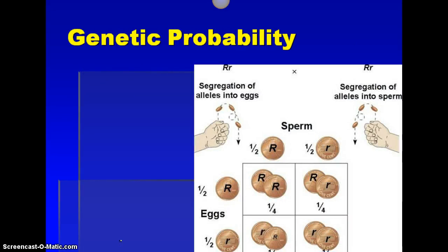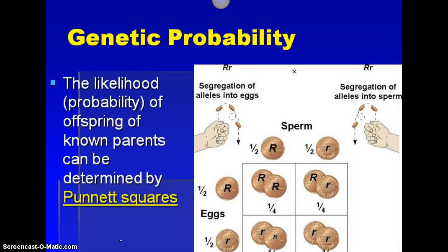The next part is looking at how Punnett squares work. Punnett squares are just the likelihood that something's going to happen — and that's also what probability is. Probability is the likelihood of an event. That's how you could put this definition in your notes packet. When we're looking at Punnett squares, we are going to be looking at the likelihood that an individual is going to have a specific trait.